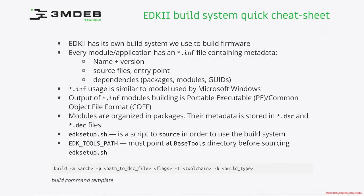The typical build command template looks as follows: build -A, where we provide the architecture, either 32-bit or 64-bit; -P, and then we provide the DSC file path, which describes our package — either a subcomponent or the whole build for a given platform. There can also be some flags and defines after that, -T to provide the toolchain, which can be GCC or some other compiler, and -b for the build type, which can be release or debug.